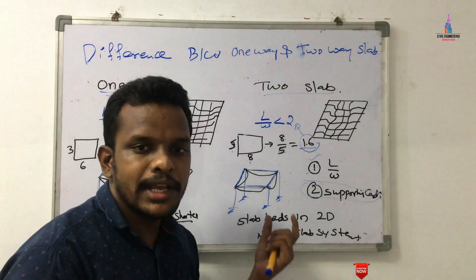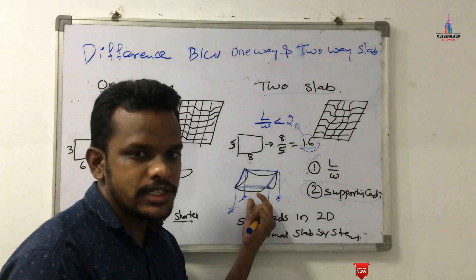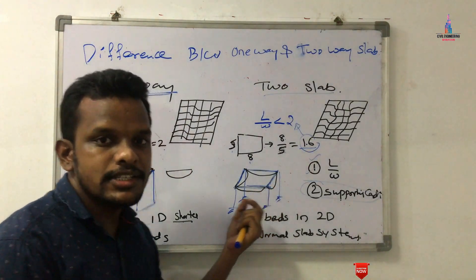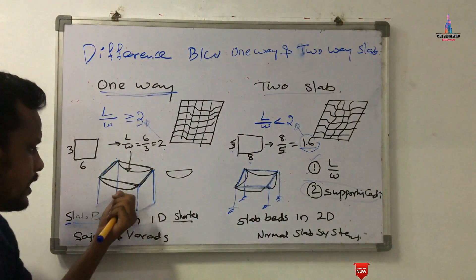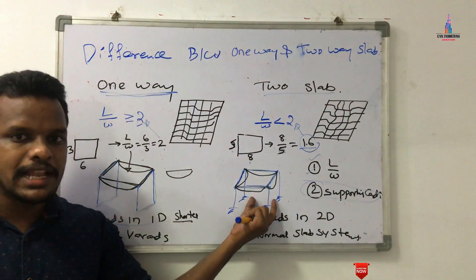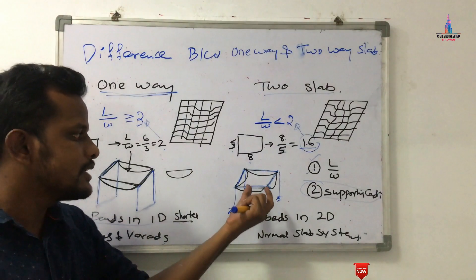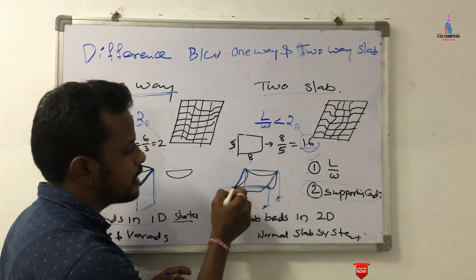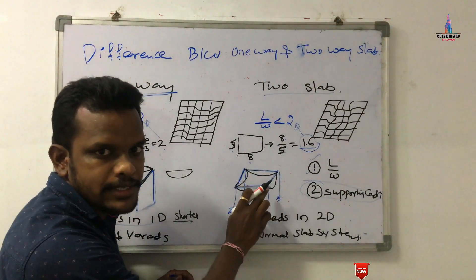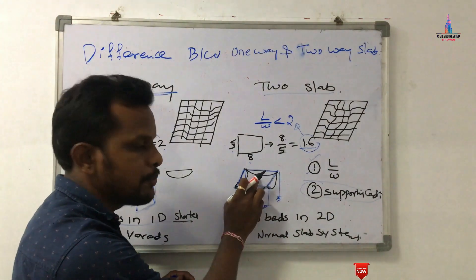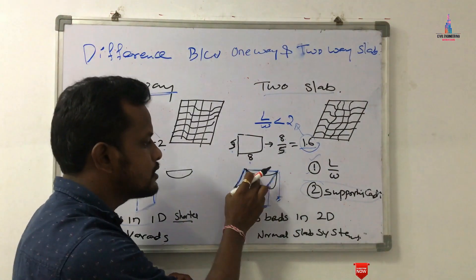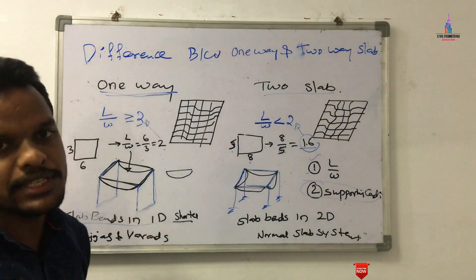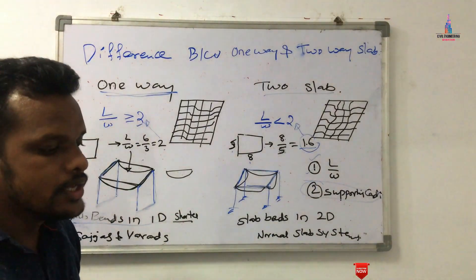Due to the loading condition and supporting members, the slab will bend, but the bending intensity will not be a higher value for the two-way slab system. This is because it has four supporting conditions, so the bending intensity will be less as compared to the one-way slab system.